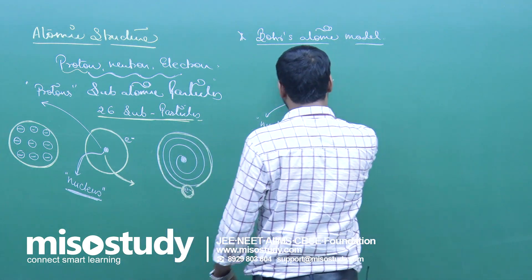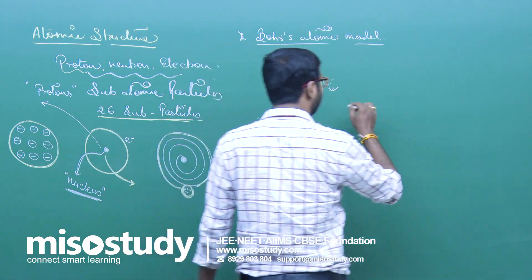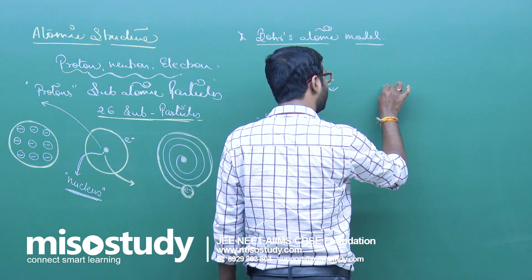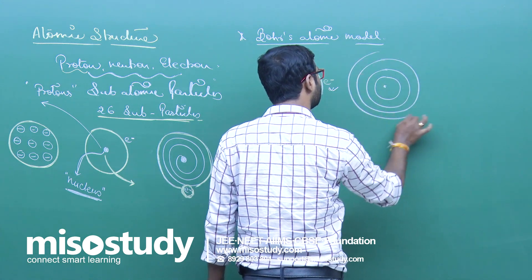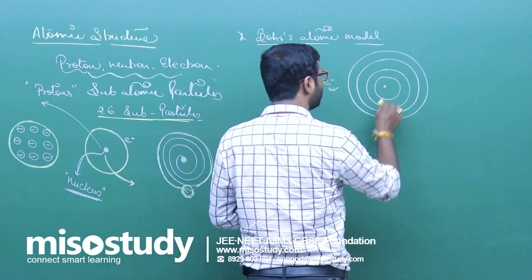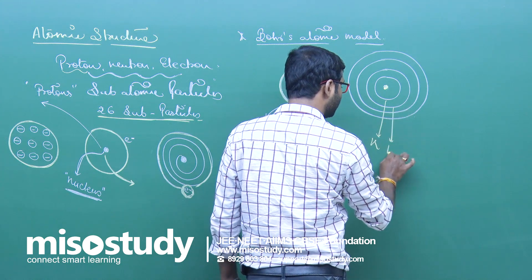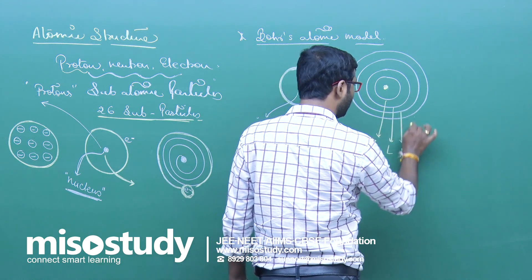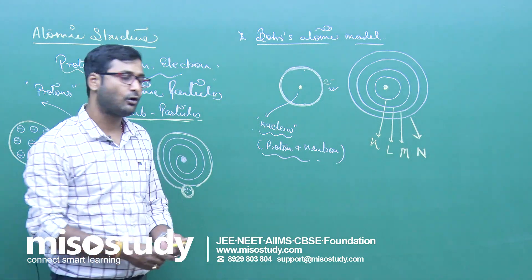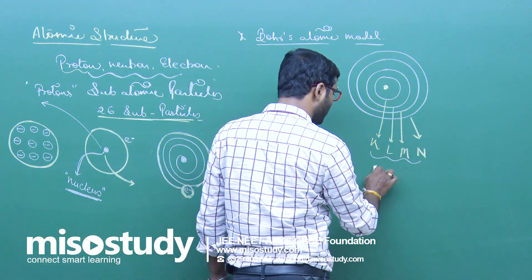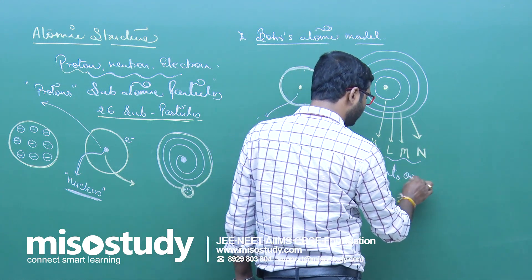Due to this reason, when electrons revolve around the nucleus, they do not lose energy. This is the Bohr model. Suppose this is a nucleus — this is K shell, this is L shell, this is M shell, and this is N shell — K, L, M, N. These are called orbits or shells.